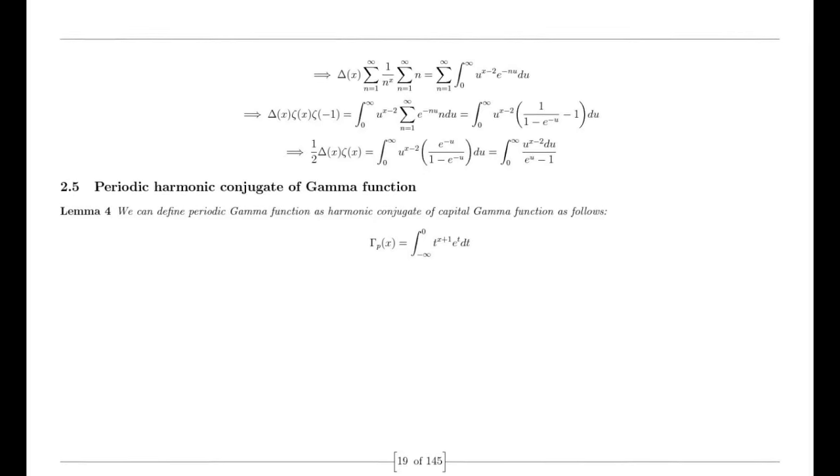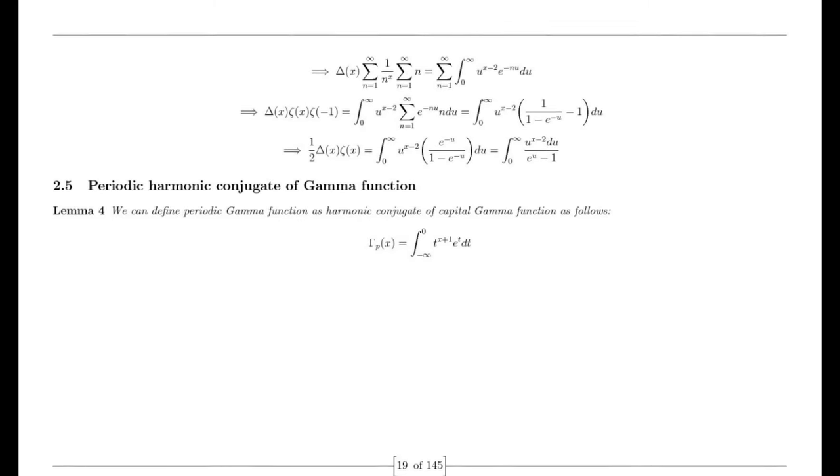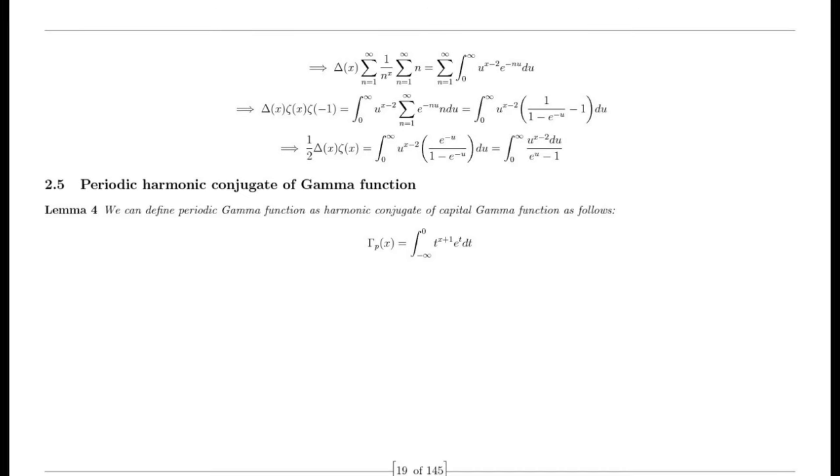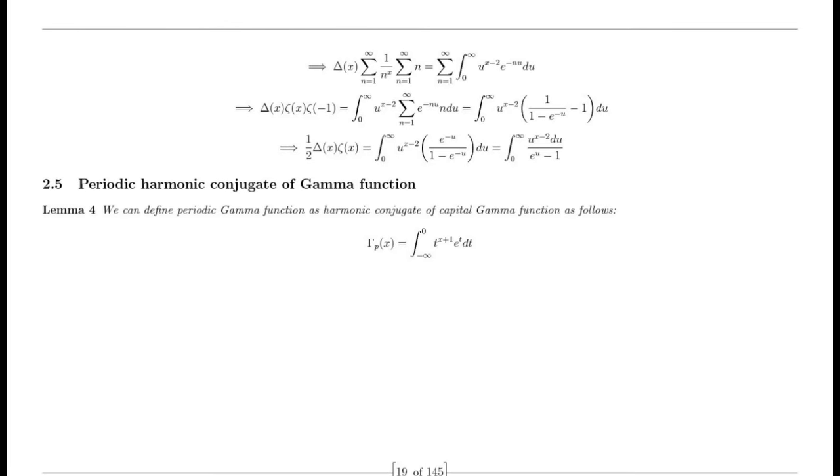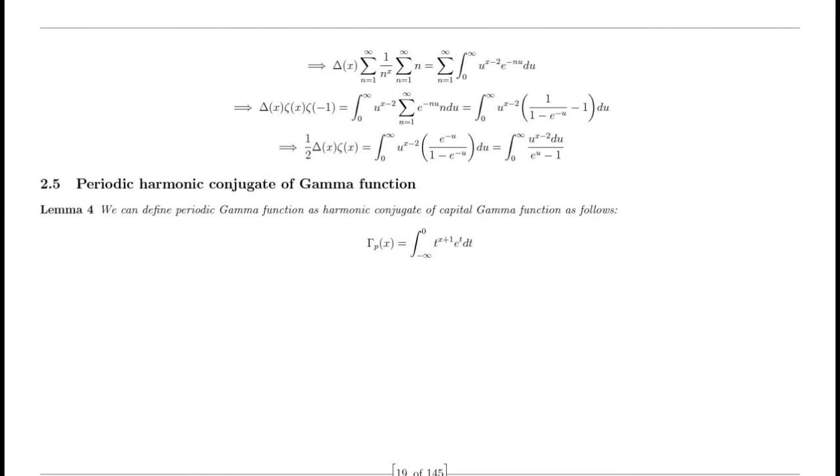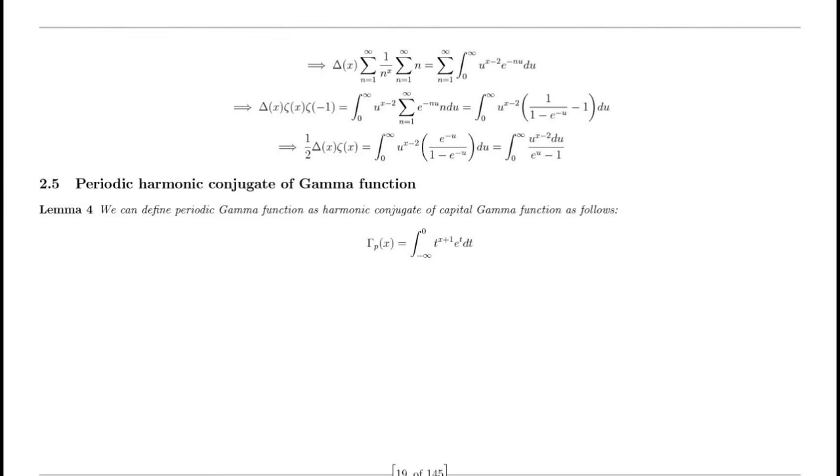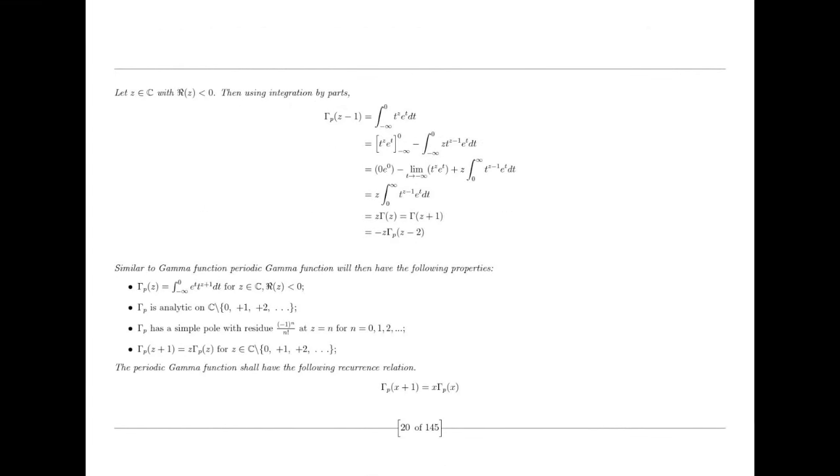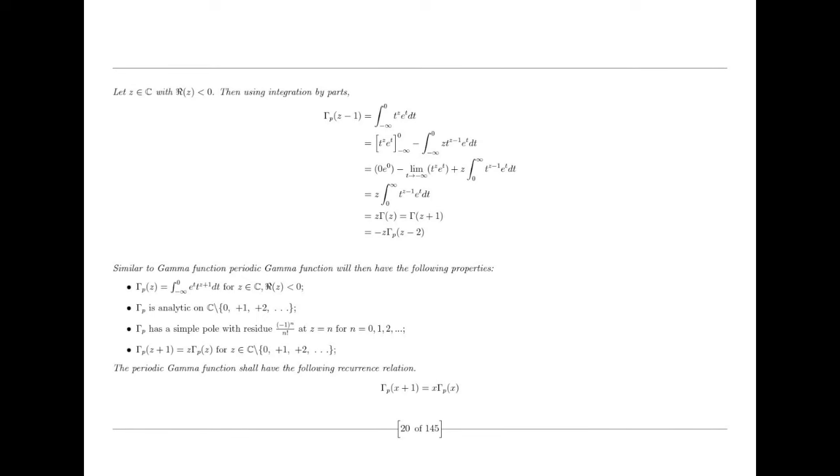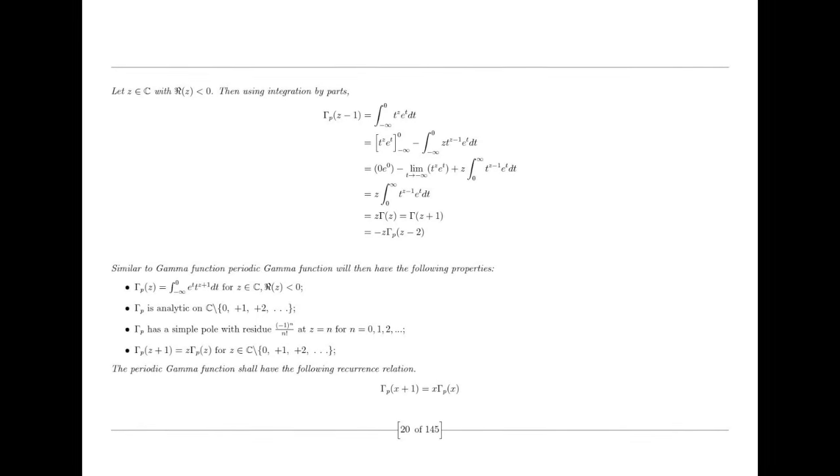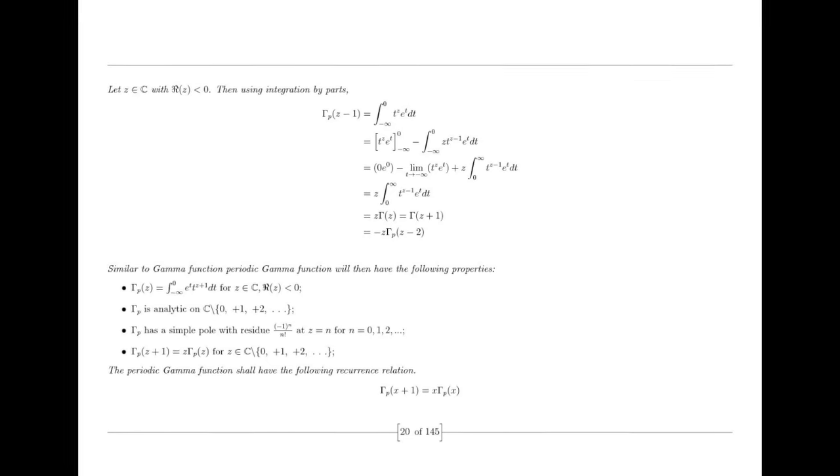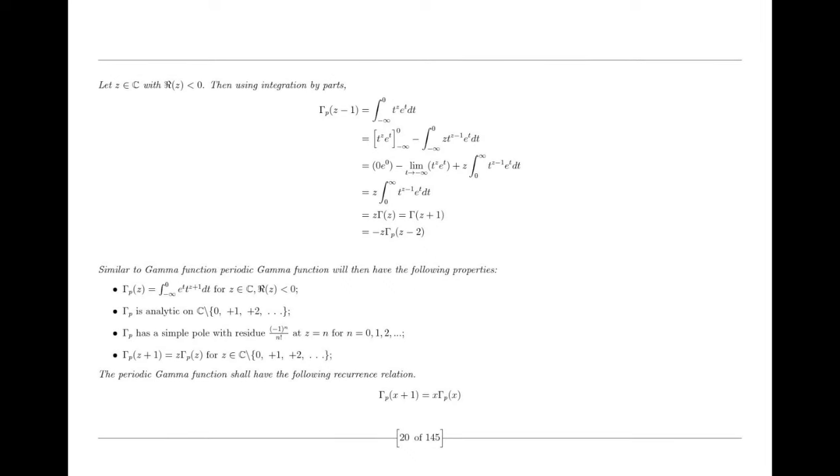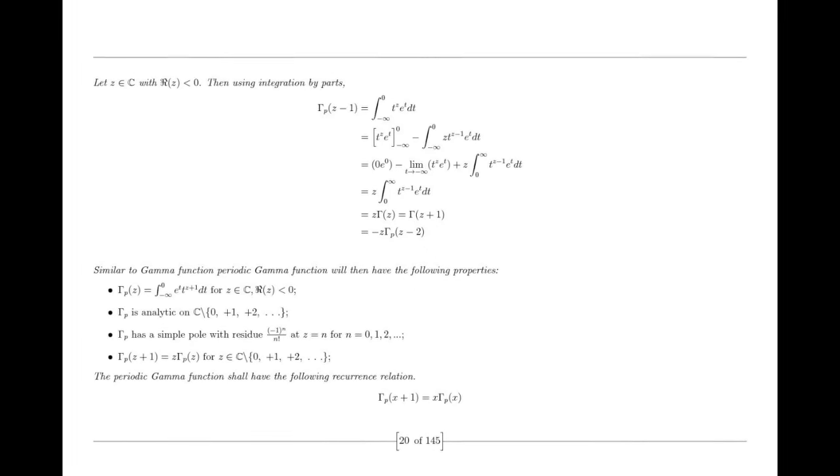I observed that the imaginary number iota had ensnared both mathematicians and physicists in its imaginary realm, keeping them engrossed. My initial elementary proof called for a half-unit circle, contradicting the conventional notion of a unit circle. I had discovered a way to incorporate a dual-unit circle within the familiar concept of a unit circle, but further justification was needed. Although complex analysis was not my cup of tea, I delved into it to ensure that my work did not violate any principles. I found no such violations, yet I encountered only rejections.